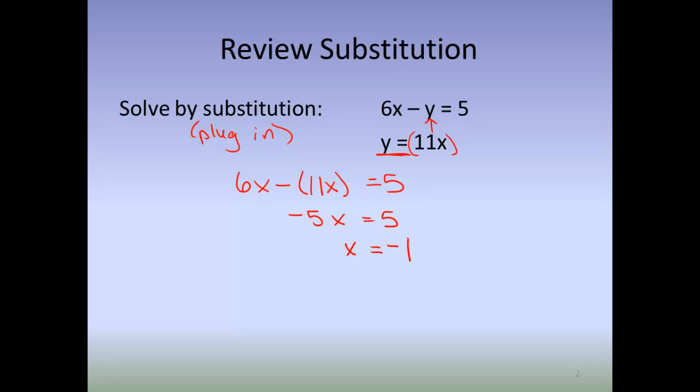But a system of equations has two variables, so we need to go back up to the original and solve for y. Since y is 11x, and now I know that x is negative 1, I get y to be negative 11. And my solution is the ordered pair, negative 1, negative 11. So that's the first basic kind of substitution.